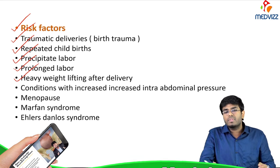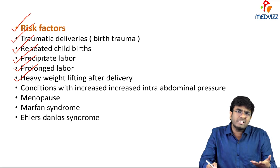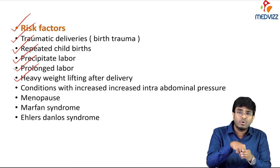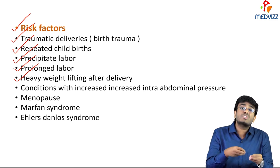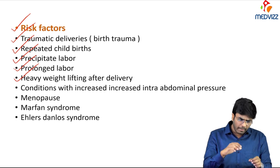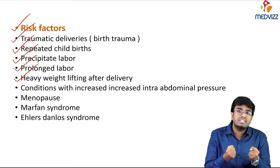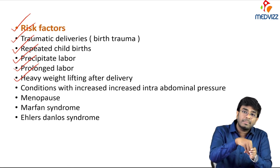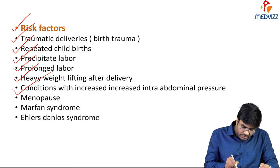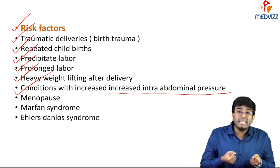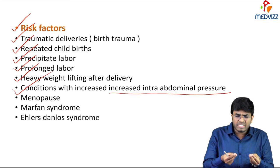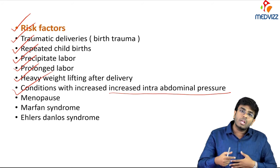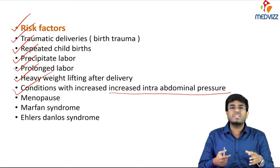Heavy weight lifting after delivery increases intra-abdominal pressure, which can push the weakened uterus down from its place. Other conditions with increased intra-abdominal pressure — lifting weights, bearing down during bowels, repeated coughing, or constipation — can all lead to pelvic organ prolapse or uterine prolapse.